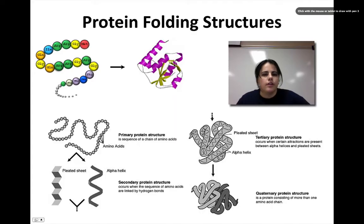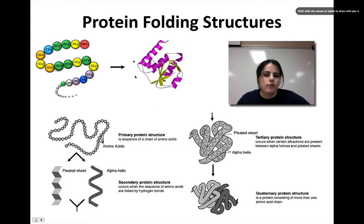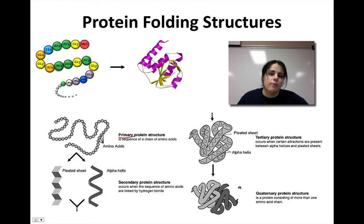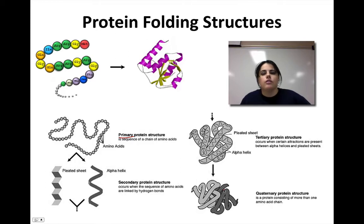Proteins have to fold together in order to be functional. Here's a bunch of amino acids in a straight chain — they have to actually fold to become a functional protein through these folding processes. The primary structure is a straight chain. The secondary structure is when it starts to bend or twist around — this is where hydrogen bonding comes into play. Tertiary is when it folds on top of itself. And when it comes together with another polypeptide or more, it makes a functional protein.